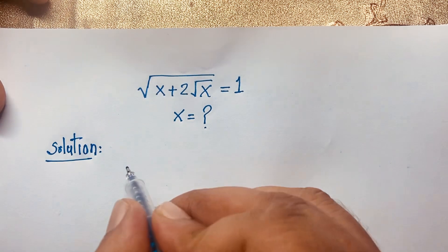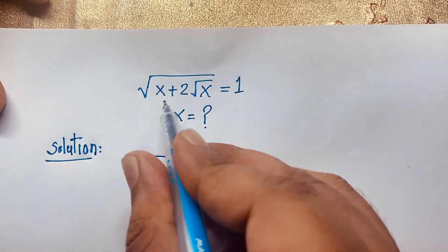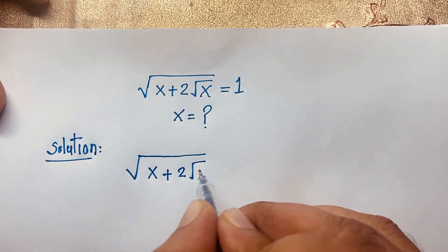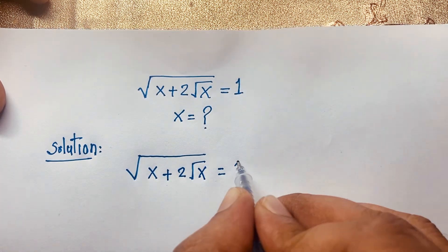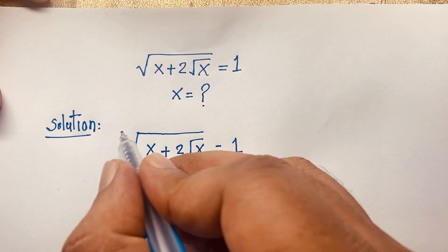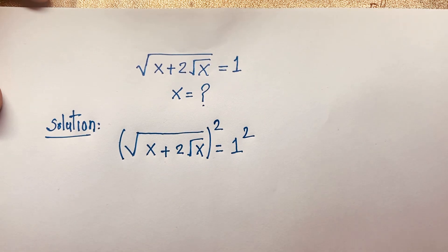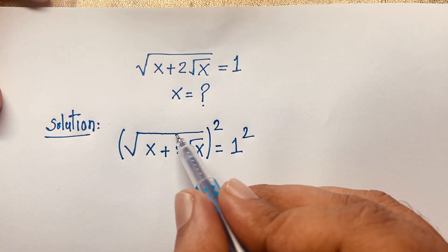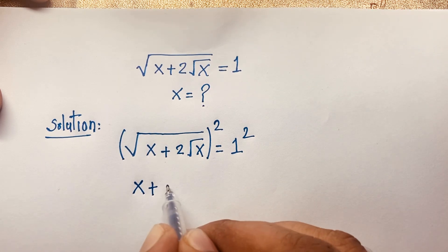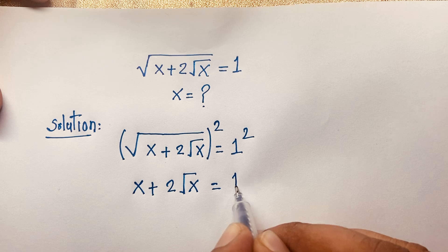Let's start. Our question: square root of x plus 2 square root x is equal to 1. Now I use both sides whole square. Then the square root is cancelled, and we find it will be x plus 2 square root x, and 1 squared will be 1.